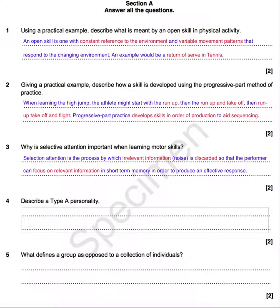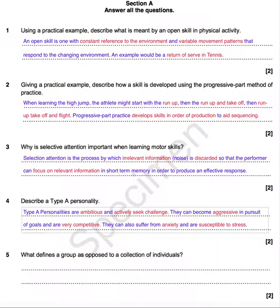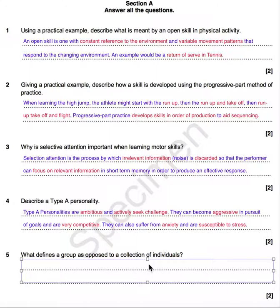Describe a type A personality. We don't have to mention type B, though you could contrast them. We need at least two characteristics. Type A personalities are ambitious, they actively seek challenge, they can become aggressive in pursuit of their goals, and they're very competitive. On the flip side, they can also suffer from anxiety and are susceptible to stress.